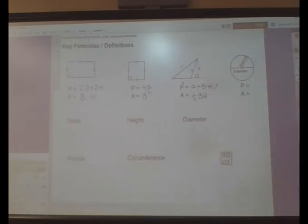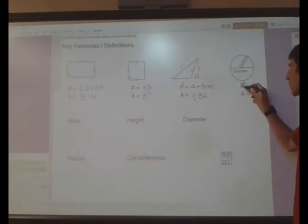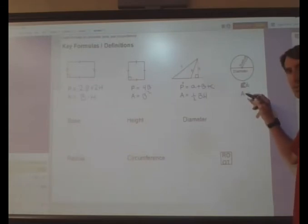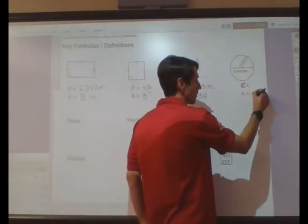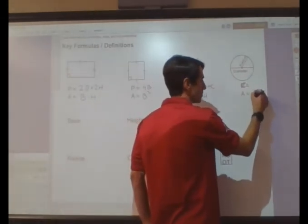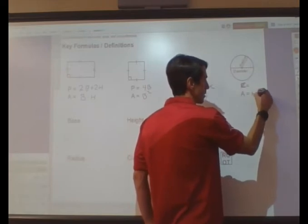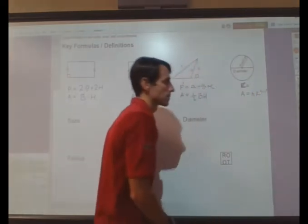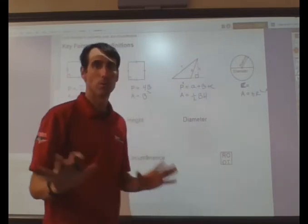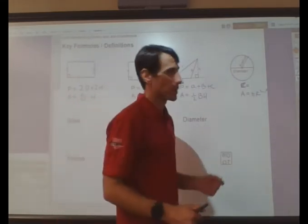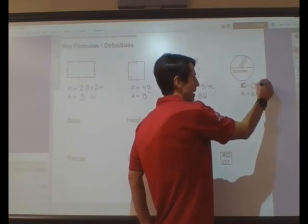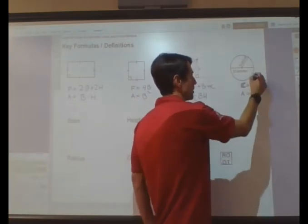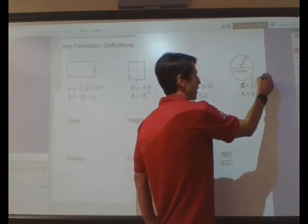For a circle, we have area and perimeter. Perimeter? What? No. It's called circumference. The area is actually pi r squared. So pi, 3.1415, you know, you get the idea, times the radius squared. The circumference is going to be the diameter times pi, also known as 2r, 2 pi r.